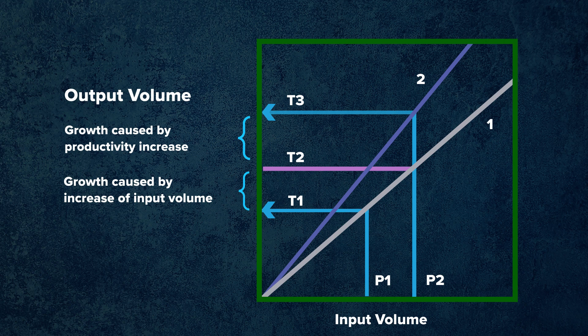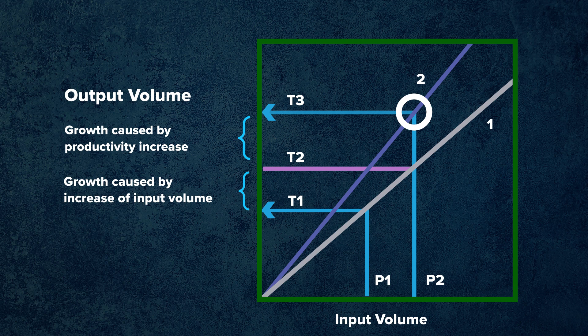To illustrate how productivity might increase output over time, consider line 2, which associates greater output for the same level of inputs. Using P2 to denote the level of inputs, you can see a clear increase in output: T2 on line 1 and T3 on line 2. The steeper gradient of line 2 explains the increased level of output due to growth caused by an increase in productivity and growth caused by an increased input volume.